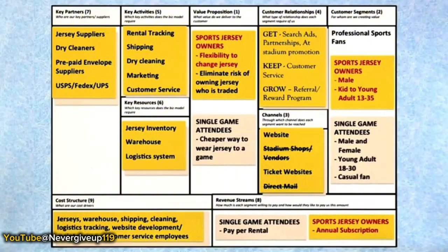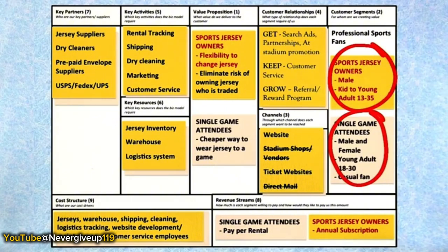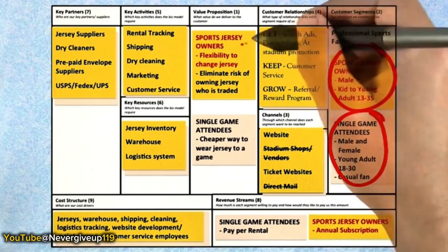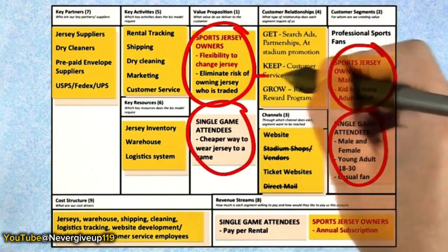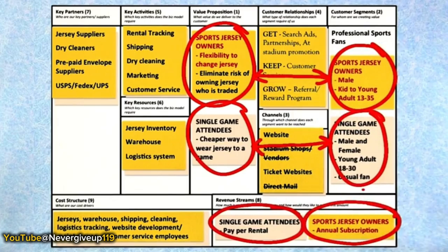Let's follow the Jersey Square team and see what they did with customer segments. They got out of the building and spoke to over 60 customers. What they found was that what they originally thought was a single customer segment actually turned out to be two separate segments. The first was rabid sports jersey owners — male, ages 13 to 35, who passionately followed their team and went to a lot of games. But there were also casual game attendees — male and female, roughly 18 to 30 — who were casual fans. Not only are there two customer segments, but there are two value propositions and two revenue streams matching each segment.